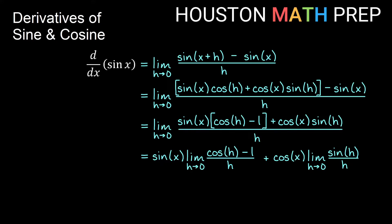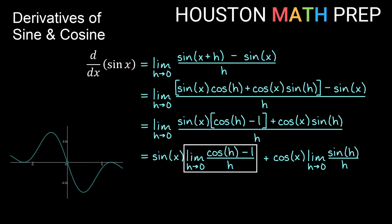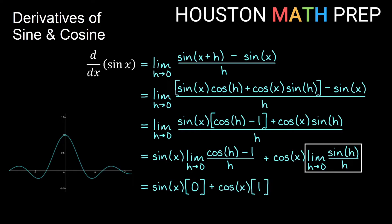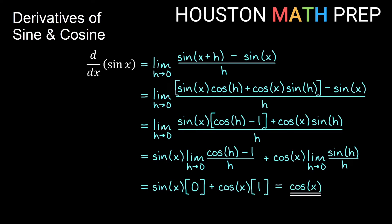Looking at the graph of (cosine h minus 1) over h as h approaches zero, we see the graph approaches an open dot at the origin with a y-value of zero — so that limit is zero. For the limit as h→0 of sine h over h, we see the graph approaches an open hole at y equals 1 — so that limit is one. We get sine x times zero plus cosine x times one, which gives us cosine x. This confirms using the limit definition that the derivative of sine x is cosine x.